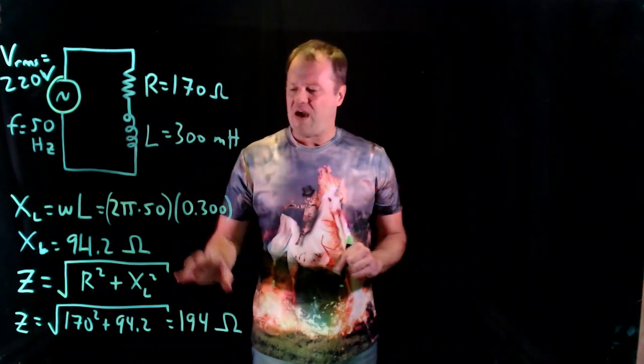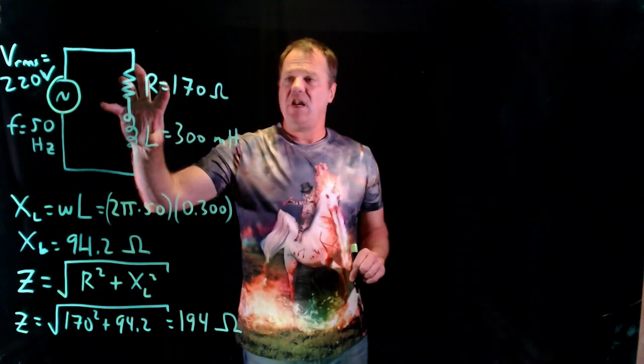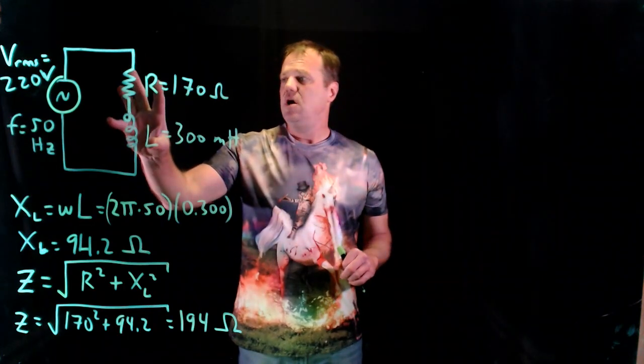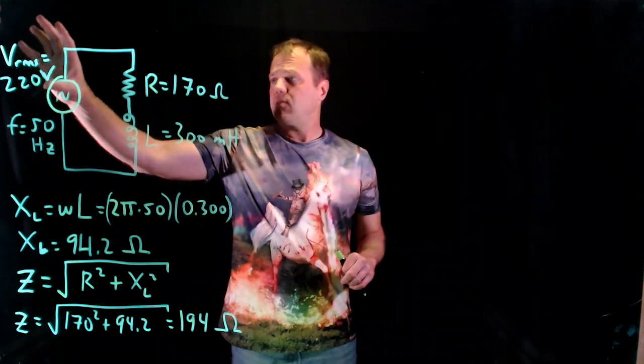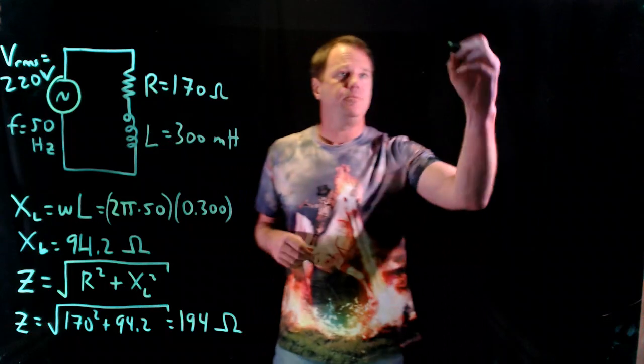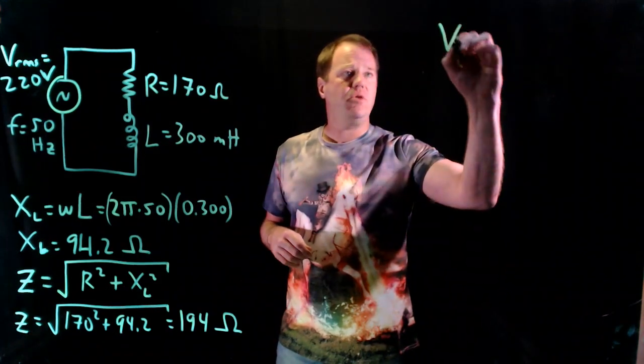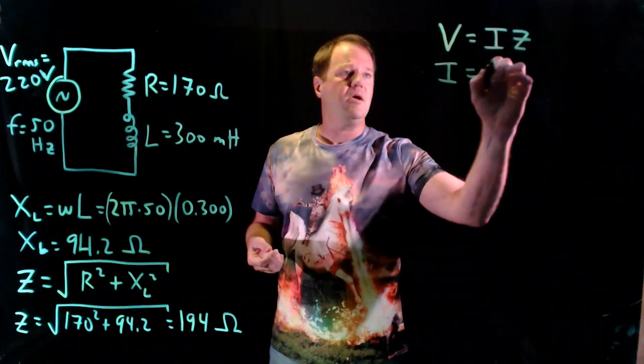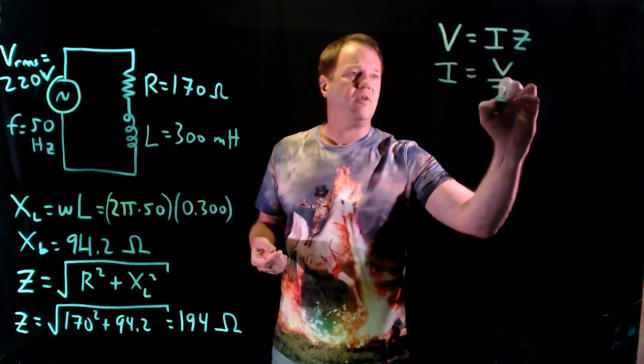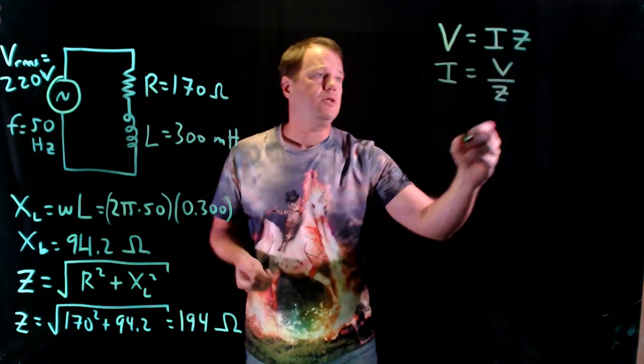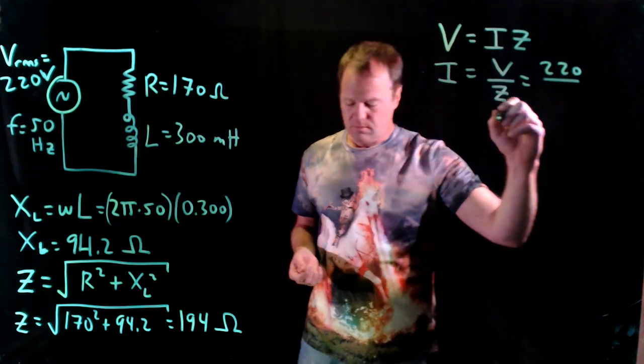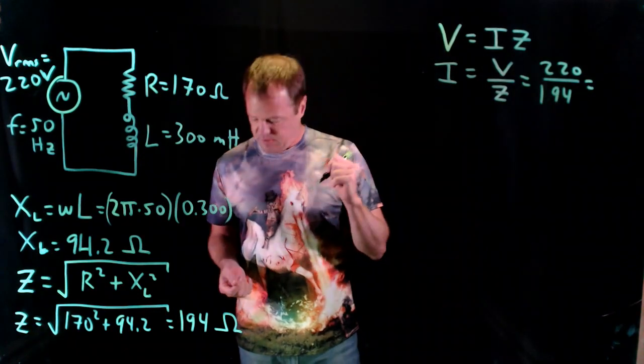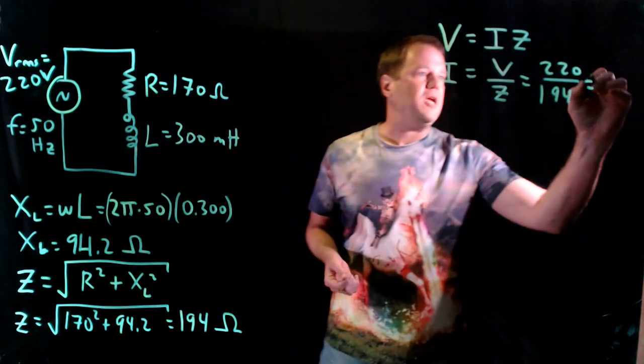So that number tells us it's sort of like, not exactly like, but it's sort of like we have a resistor of 194 ohms instead of this pair of circuit elements. Well, what can I do with that? Now that I know the collective behavior of these two, I can apply Ohm's Law to the circuit because I know it's 220 volts. So I have the voltage across the group will be the current of the group times the impedance of the group. And so solving for current, current will be the voltage, RMS voltage divided by the impedance. So I'm using RMS voltage, I'm going to get RMS current. So 220 volts over the impedance of 194 ohms, and it spits out an answer of 1.13 amps.